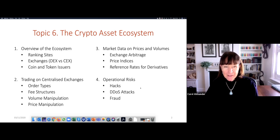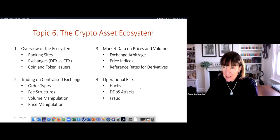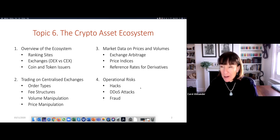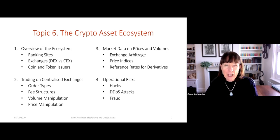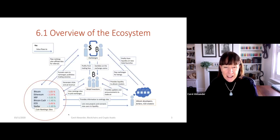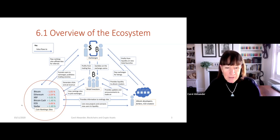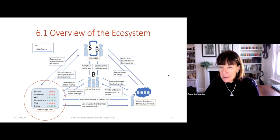The three entities are: the ranking sites; the exchanges — two types, the decentralized exchanges or DEX, and the centralized exchanges or CEX; and then the coin and token issuers. And in the middle of all that, there's the people who buy and sell the coins. This is the diagram that shows the symbiotic relationship that the exchanges have with the ranking sites and the issuers of the coins.